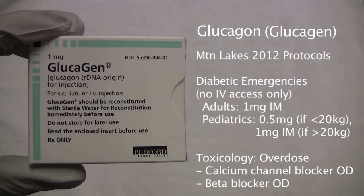In the 2012 Mountain Lakes Protocols, we are allowed to use glucagon in diabetic emergencies with no IV access. In adults, we can give 1 mg intramuscularly, and in pediatrics, 0.5 mg if less than 20 kg, otherwise 1 mg intramuscularly.